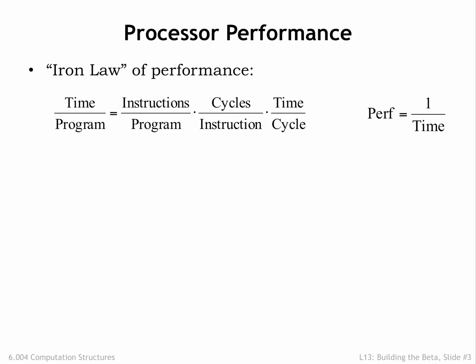The performance of a processor is inversely proportional to the length of time it takes to run a program. The shorter the execution time, the higher the performance. The execution time is determined by three factors. First, the number of instructions in the program. Second, the number of clock cycles our sequential circuit requires to execute a particular instruction.